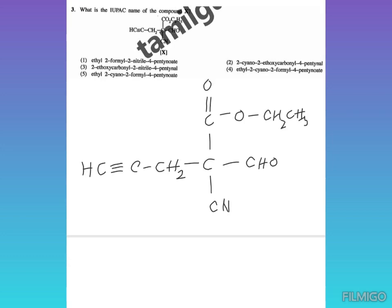2016 paper, question number three: What is the IUPAC name of compound X? This compound X is an ester. Esters are formed by a reaction between an alcohol and a carboxylic acid.